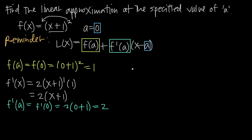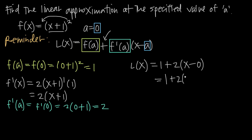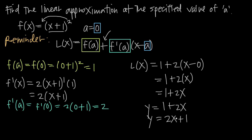Now we have all the information we need. We can say L of x is going to be equal to: f of a is 1, plus f prime of a which is 2, multiplied by x minus a. Since a is 0, we get x minus 0. Simplifying: 1 plus 2 times x, which gives us 1 plus 2x. This is the linear approximation of the function at the point a equals 0. We could also write this as y equals 1 plus 2x, or in slope-intercept form, y equals 2x plus 1 — the line that most closely approximates this function when a is equal to 0.